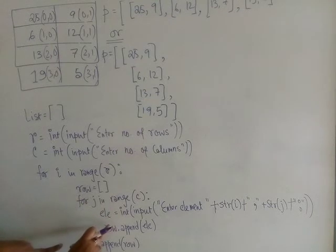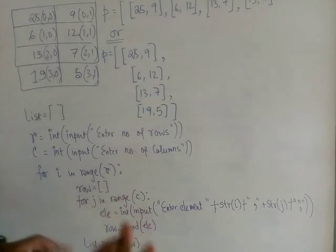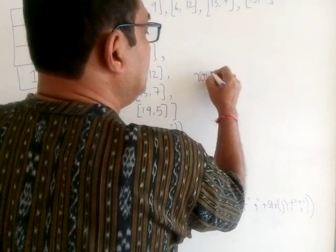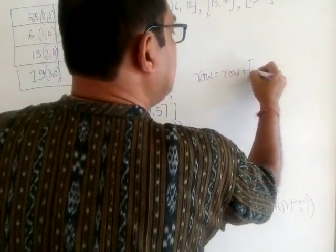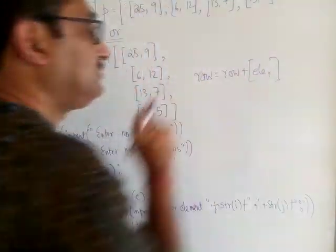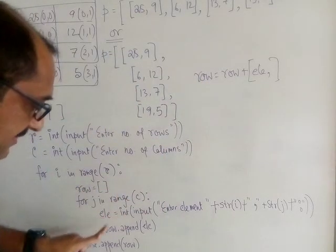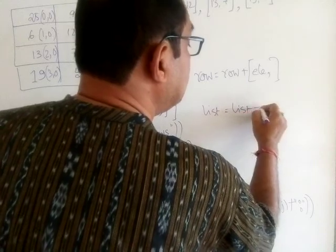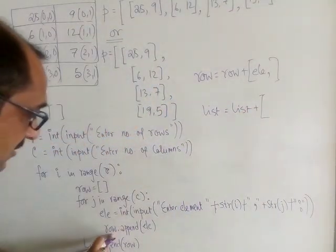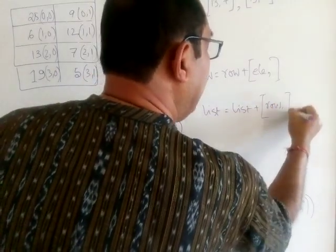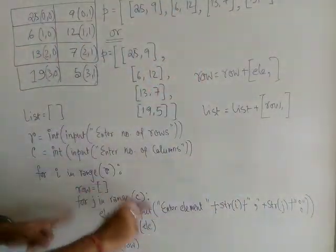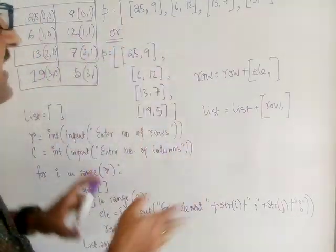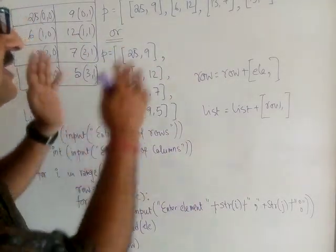Rather than using `append`, you also have the choice of writing `row = row + [ele]` to add elements to the row list. Similarly, instead of `list.append(row)`, you can write `list = list + [row]`. Both approaches work for inputting a double dimension array. In the next videos we will see how to solve various kinds of problems related to double dimension arrays using nested lists.